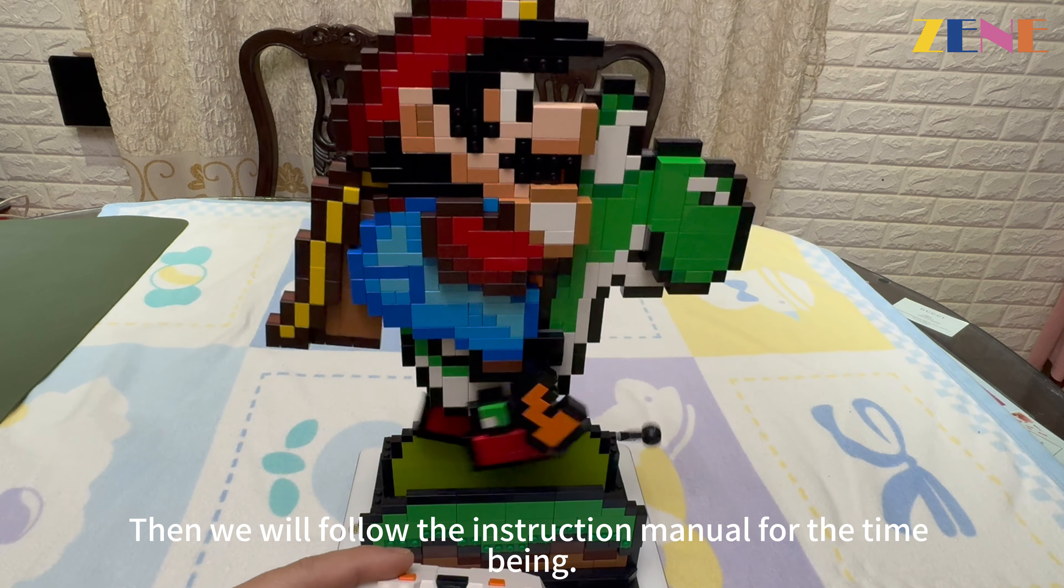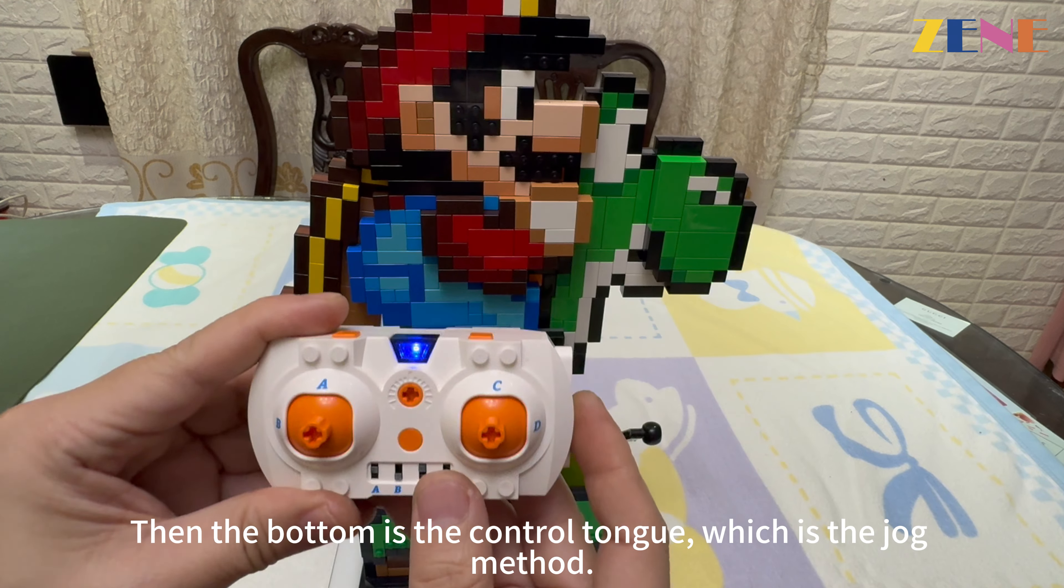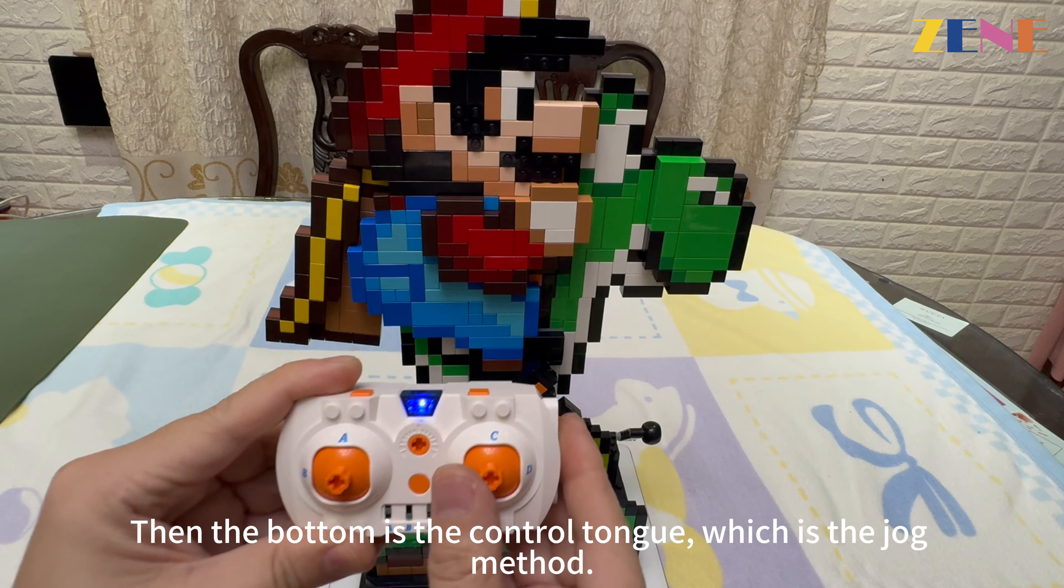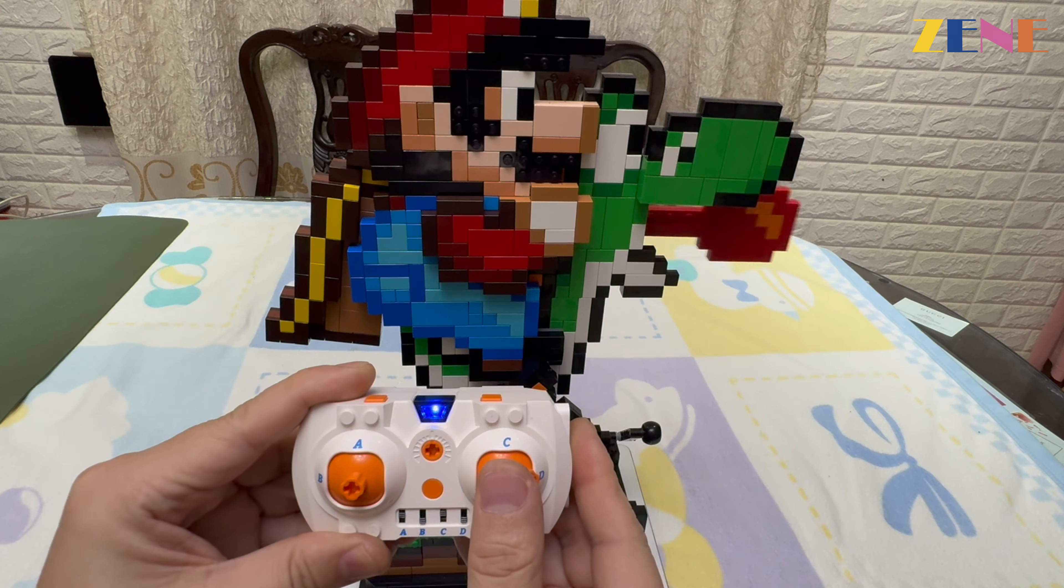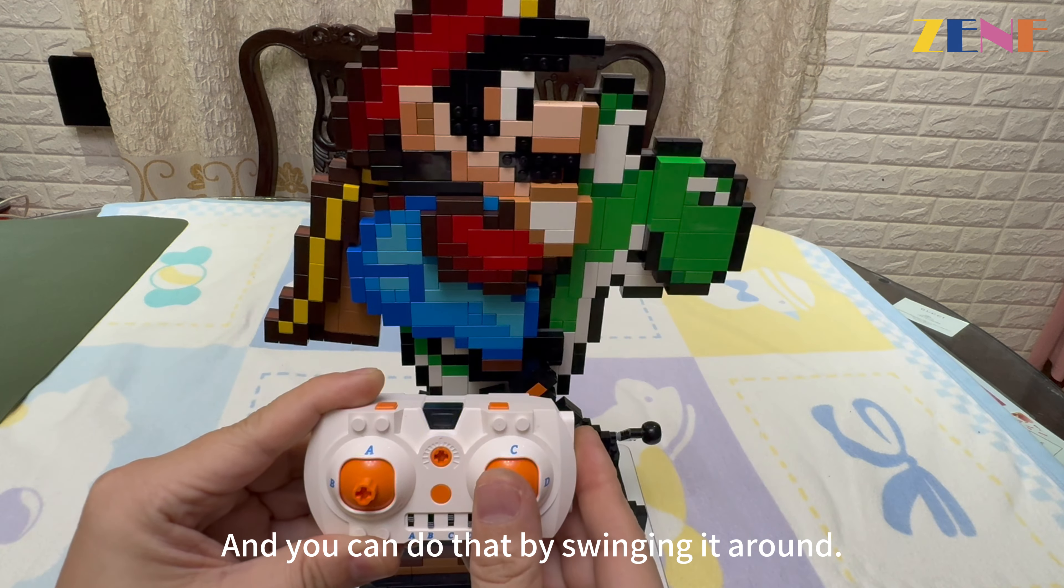Then the bottom is the control tongue, which is the jogging method. This extends, and you can do that by swinging it around. This can also be operated on both sides at the same time.